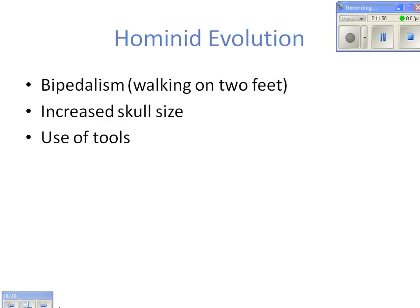Finally, the trends in hominin evolution — three big ones. First, we started walking on two feet, called bipedalism. Second, skull size got much bigger, implying brains got bigger. Third is the use of tools — you can find fossilized tools near hominin fossils. That's a basic overview of everything you need to know for evolution.